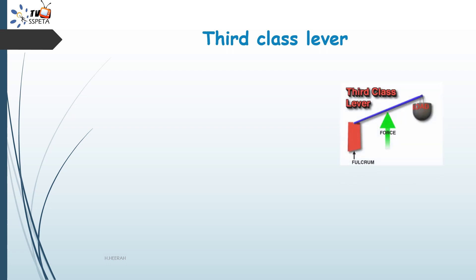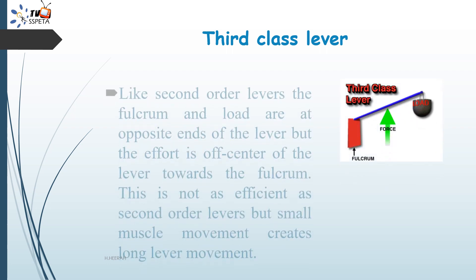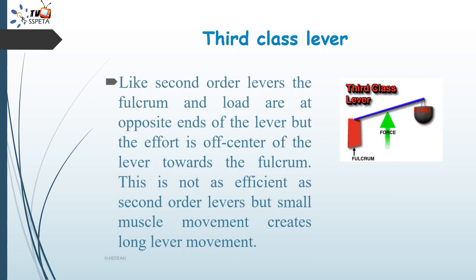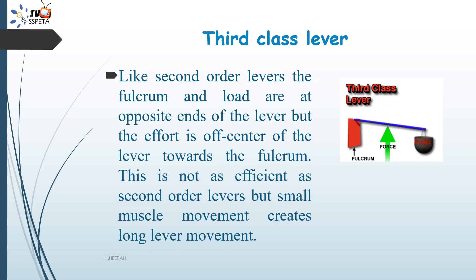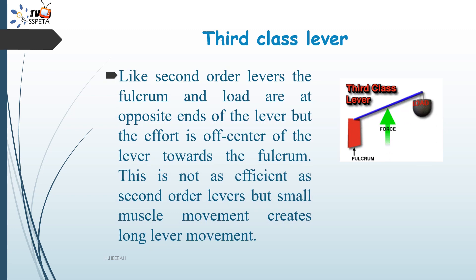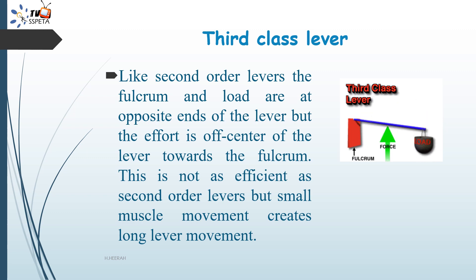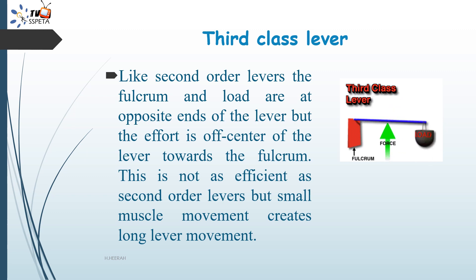In a third class lever, like second class levers, the fulcrum and load are at opposite ends, but the effort is off-center towards the fulcrum. This is not as efficient as second class levers, but small muscle movement creates long lever movement.